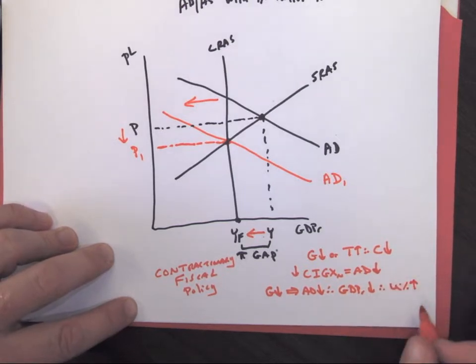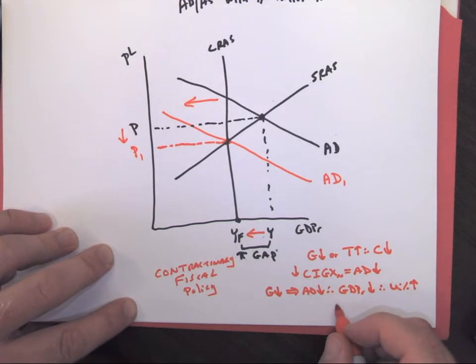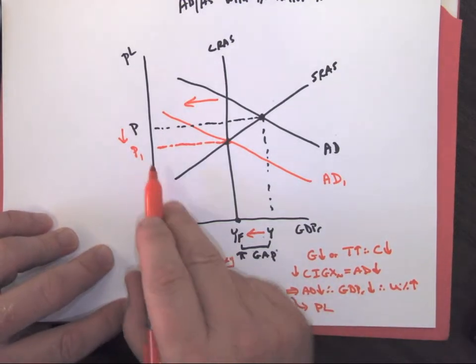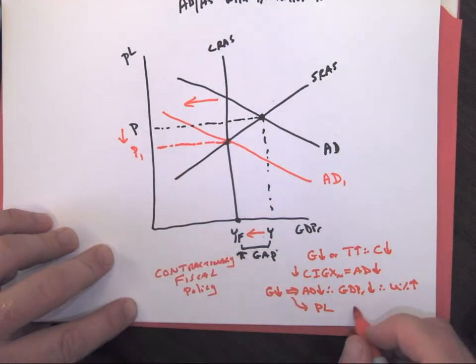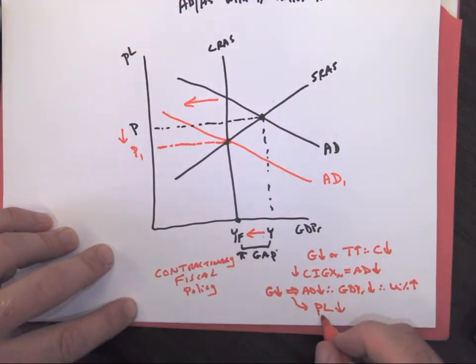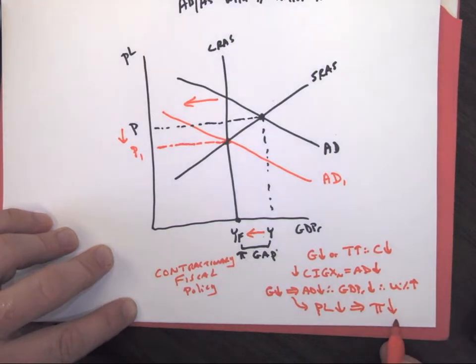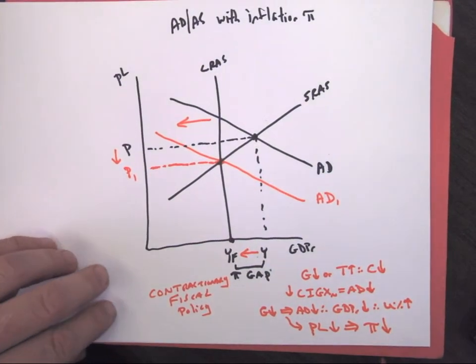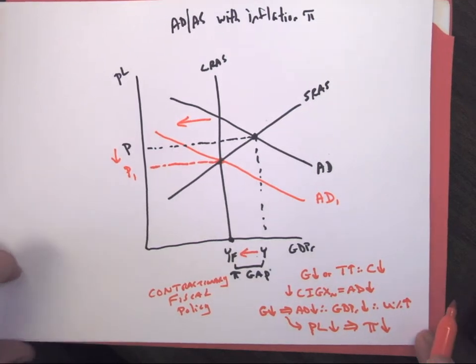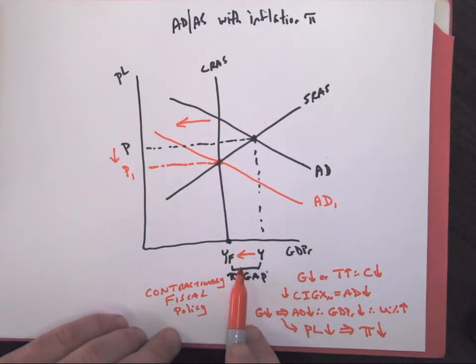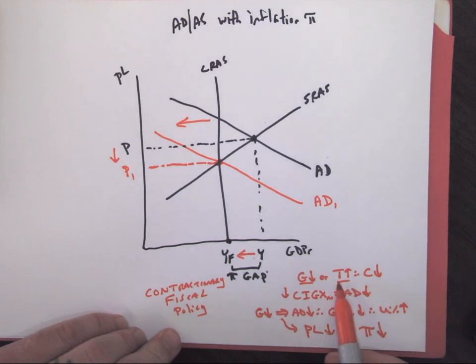At the same time, price level which we see over here, our prices have decreased. Price level decreasing is going to lead to our ultimate goal of this policy which is to decrease inflation. We want price level stability in our economy. That's the whole idea of contractionary policy, keep those ups and downs from getting too crazy and prices being too much. We've closed our inflationary gap with our contractionary fiscal policy items right here.